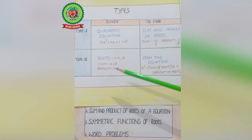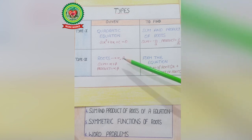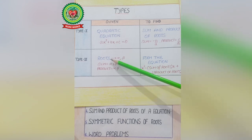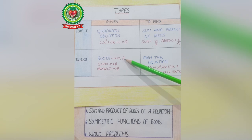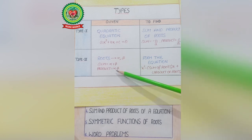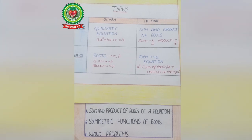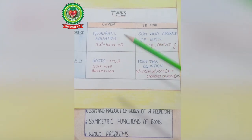The second type is when Roots are given. Let alpha and beta be the Roots. When Roots are given, first find the Sum of Roots by adding the two values, and the Product of Roots by multiplying both the Roots. Then we have to form the equation. The equation is: x² − (Sum of Roots)x + (Product of Roots) = 0. These are the things you have to remember — what is given and what we have to find.